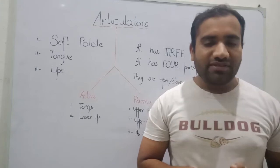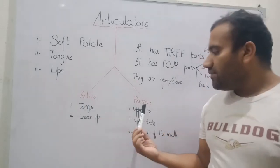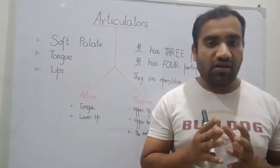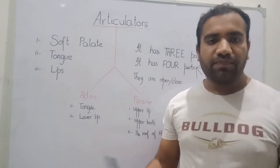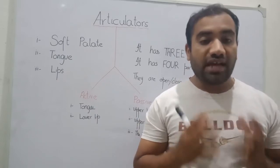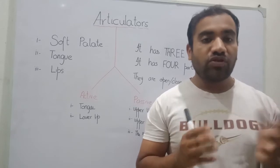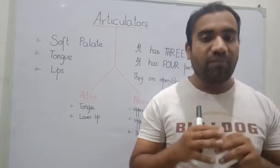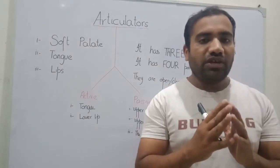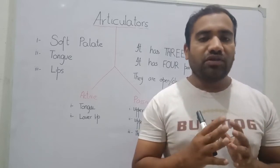Our articulators are of two types. One is the active articulators — the most active articulators are the tongue and the lower lips. Active articulators are those organs of a human being that move from one place to another place to produce sounds, and they touch the passive articulator. In this way the active articulator and the passive articulator come close to each other and produce a particular sound in any language. This is the process called the articulatory process.